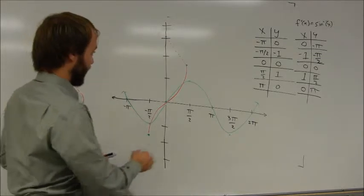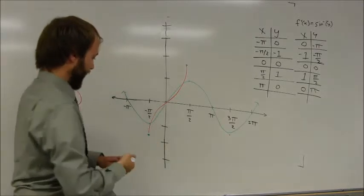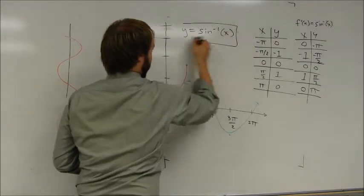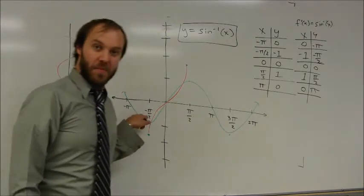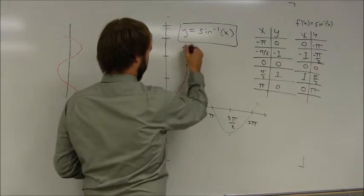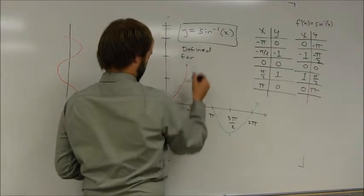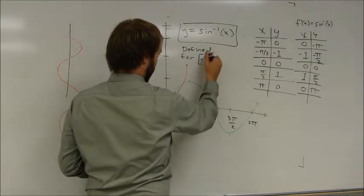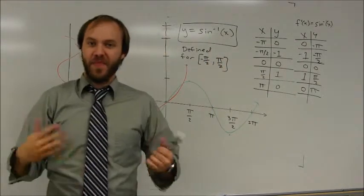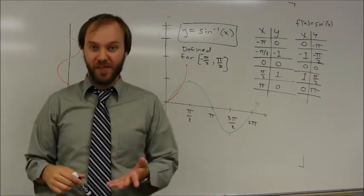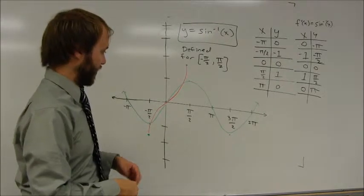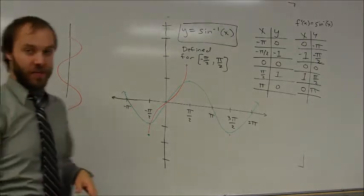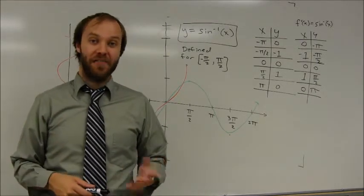The interesting thing about the inverse sine function is it does not include any other points other than just these values. So y equals inverse sine of x is only defined for input values from negative pi over 2 to positive pi over 2. That's something that takes a little getting used to, but if you look at your graphing calculator you'll see that's the graph that's made because it always gives you functions. Visually it basically just looks like a sine function turned on its side, but we're only seeing a little bit of it because we're only using the part that creates an actual function.